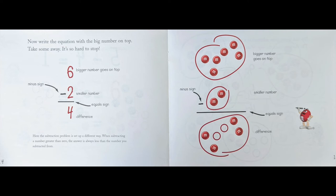Here the subtraction problem is set up a different way. When subtracting a number greater than zero, the answer is always less than the number you subtracted from. Big number goes on top, smaller number goes on bottom, minus sign, equal sign, difference.